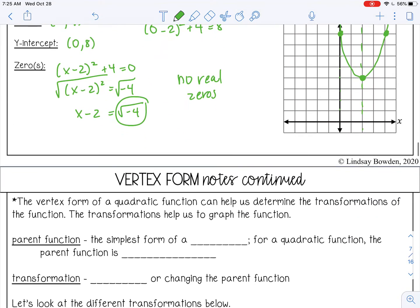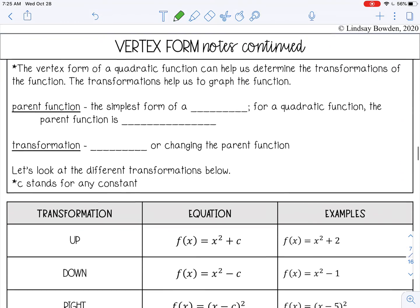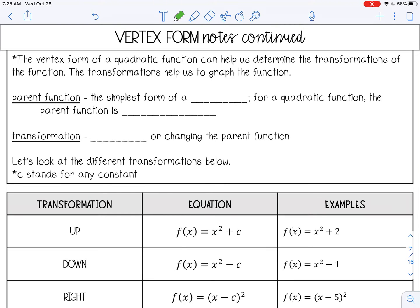Moving on. The vertex form of a quadratic function can help us determine the transformations of the function. The transformations help us to graph the function. Remember, a parent function is the simplest form of a function, and for quadratics it's just x squared. A transformation means moving or changing that parent function.